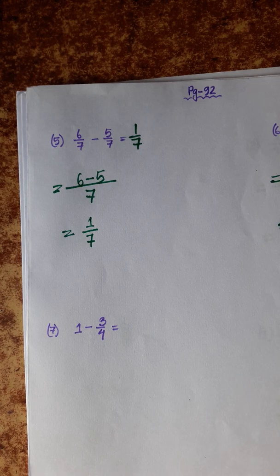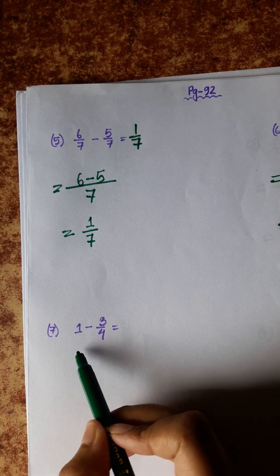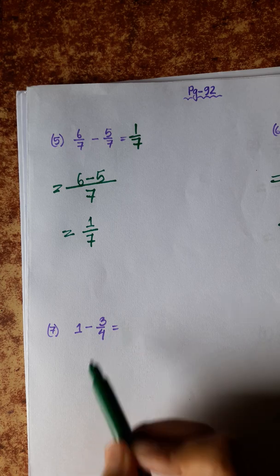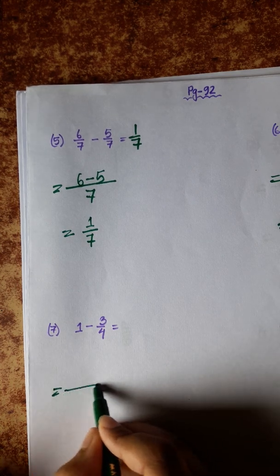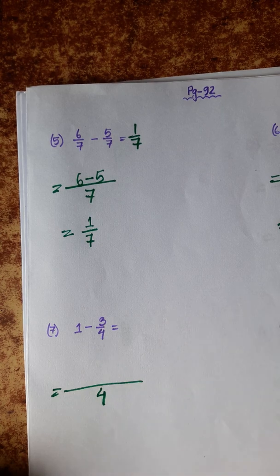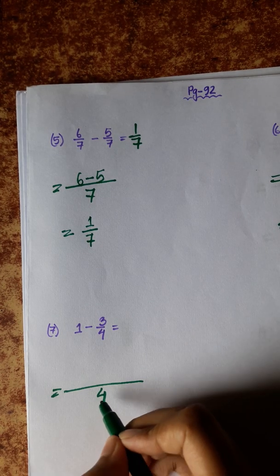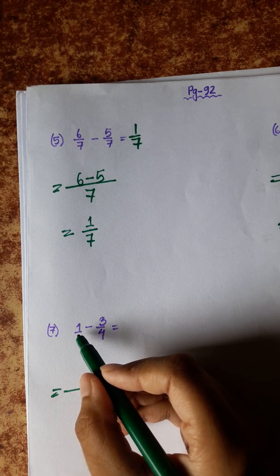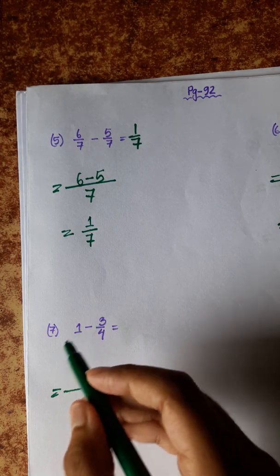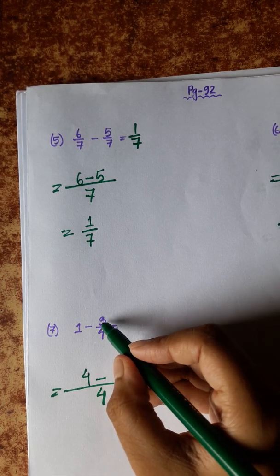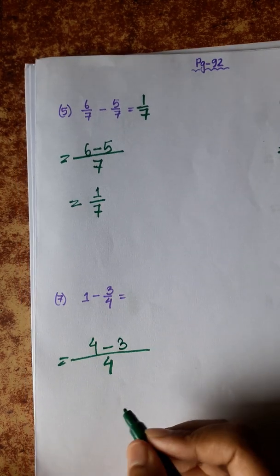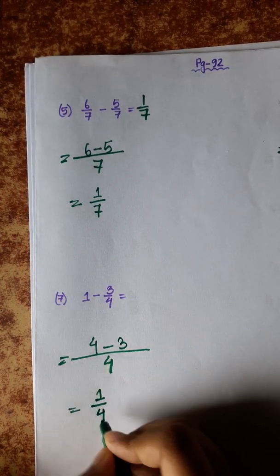Now a different type of math: a whole number minus 3 by 4, that is, whole number minus fraction. We treat the whole number as a fraction: 1 by 1. We find the LCM of 1 and 4, which is 4. So we write 4 as denominator, multiply: 4 into 1 equals 4, minus 4 divided by 4 equals 1, then 1 into 3 equals 3. So 4 minus 3 equals 1. The answer is 1 by 4.